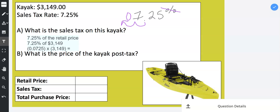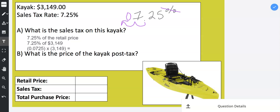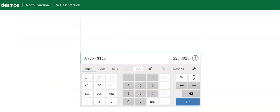So I'm going to go over to my Desmos calculator and type in .0725 times 3,149. Yes. And I get $228 and then it says .3025.